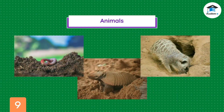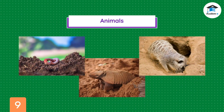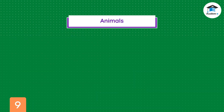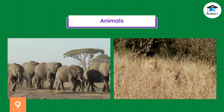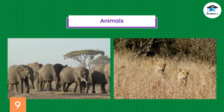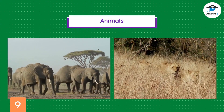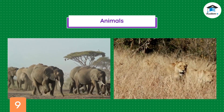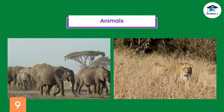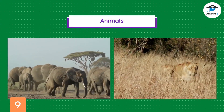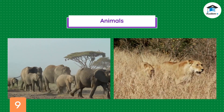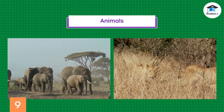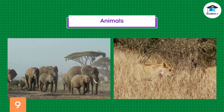Animals that live underground also contribute to physical weathering. As burrowing animals such as earthworms dig deeper, they cause rocks to break into pieces. Other big animals like elephants, tigers, and lions cause weathering when their feet scratch rocks as they walk or run around looking for food.